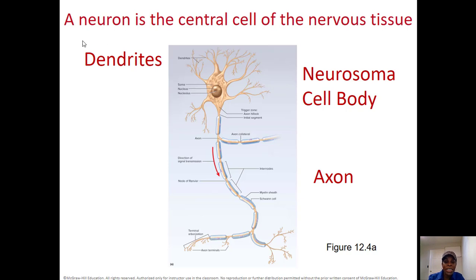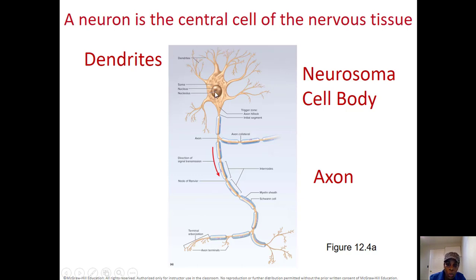You can see on this picture that the neuron has a cell body — the big part with the nucleus. The cell body is also called the neurosoma. Then you see some extensions called dendrites, and this long part called the axon.